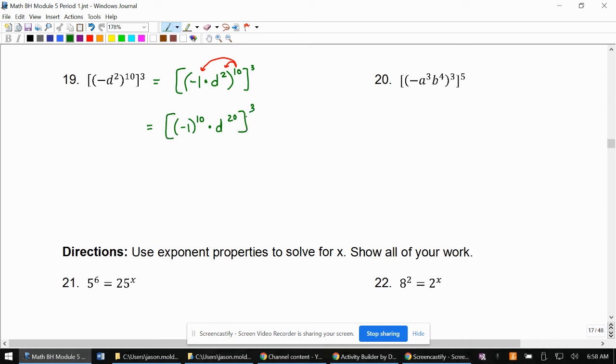And whatever I get there, I'm going to cube. Negative 1 to the 10th with parentheses like this is 1, times d to the 20th cubed is d to the 60th, because 1 cubed is 1.